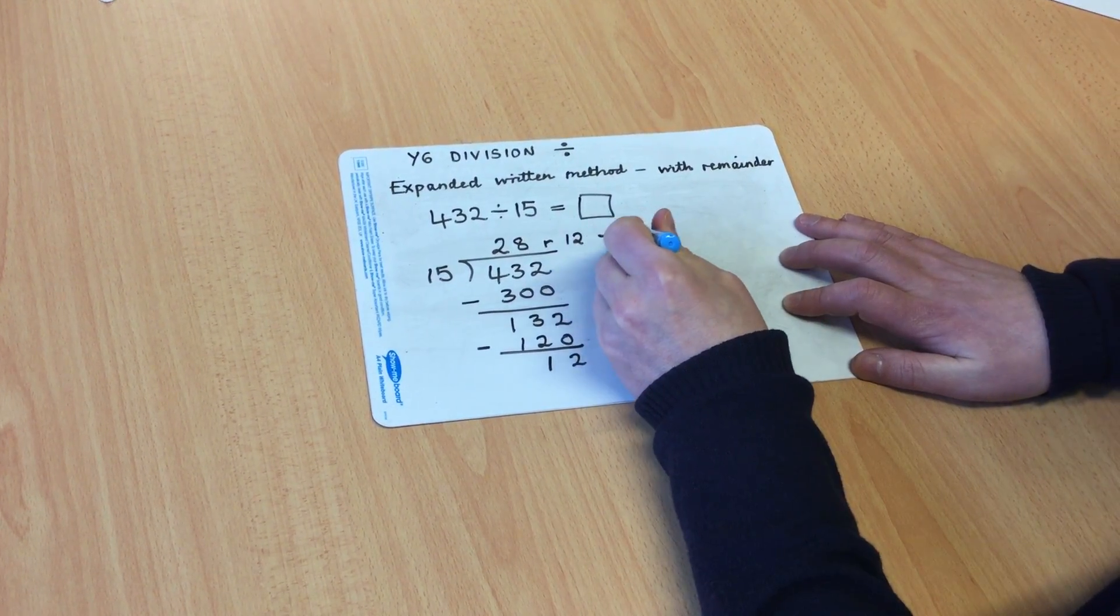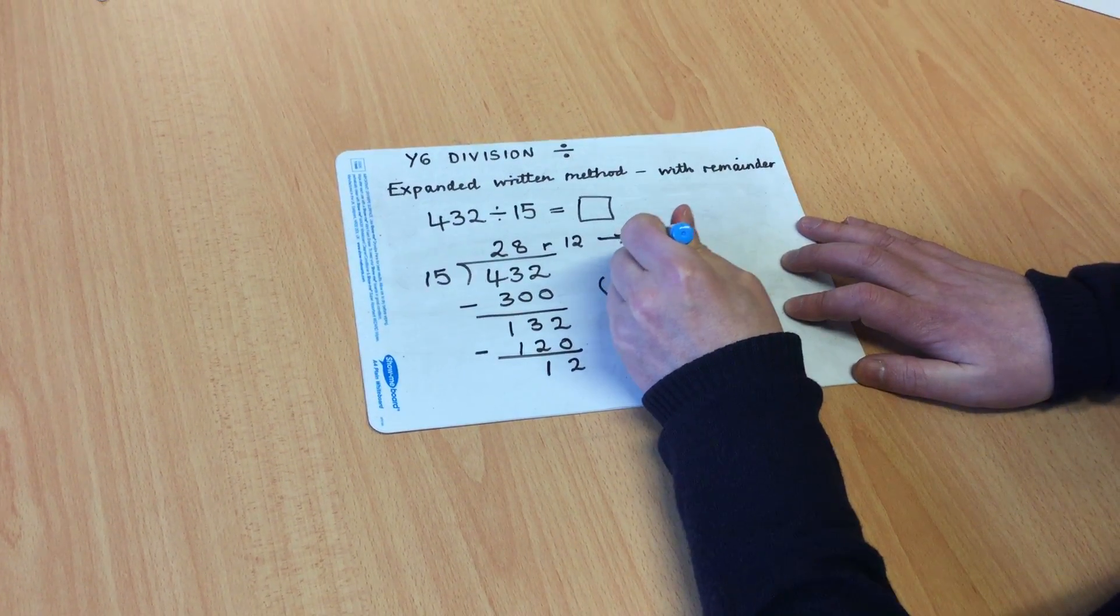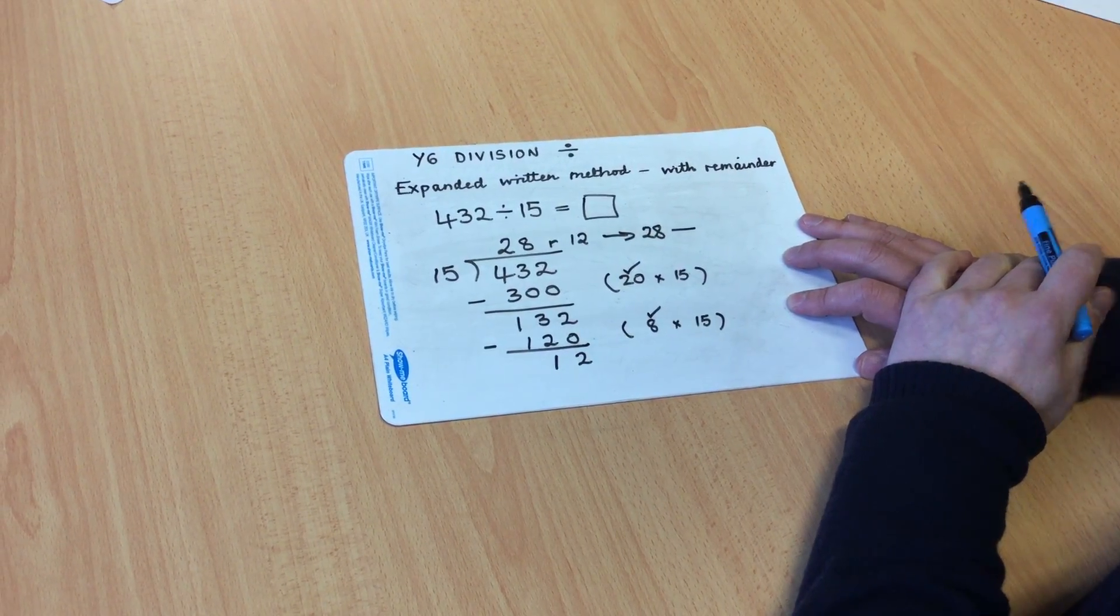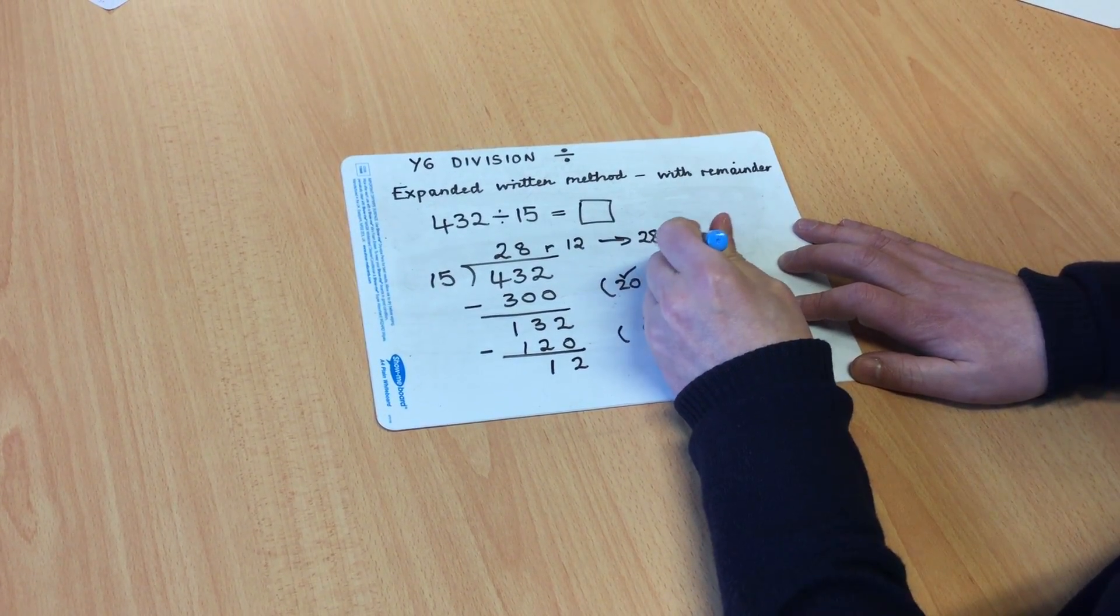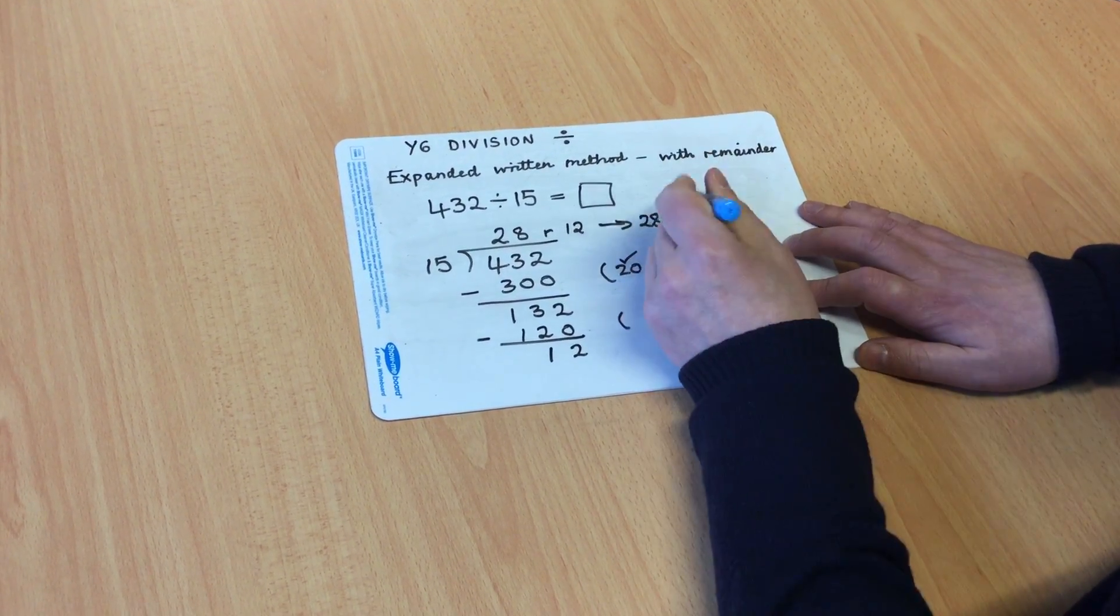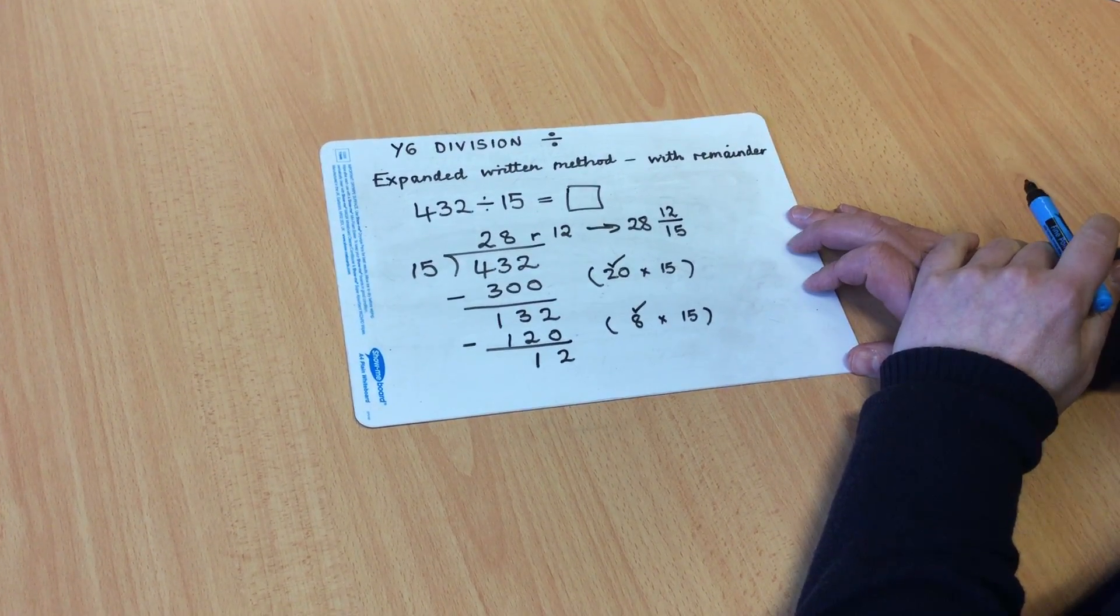Now in Year 6, we would ask the children to record that as a fraction. So we would have 28, and then the divisor becomes the denominator, so 15ths. And the remainder becomes the numerator. So it becomes 28 and 12 15ths.